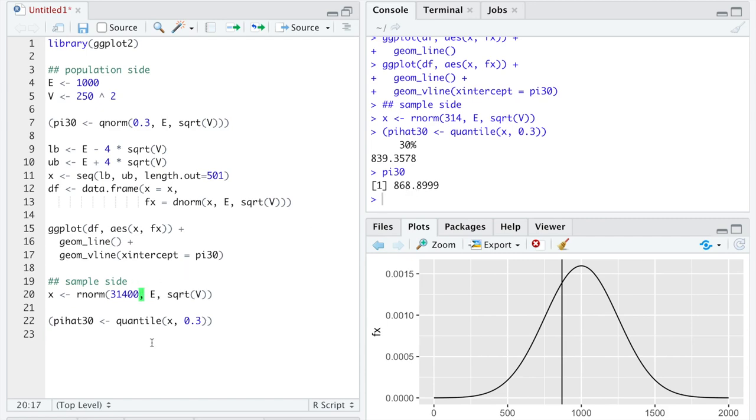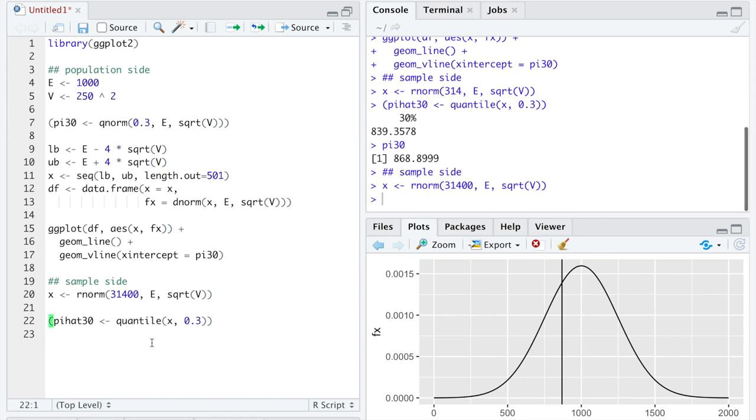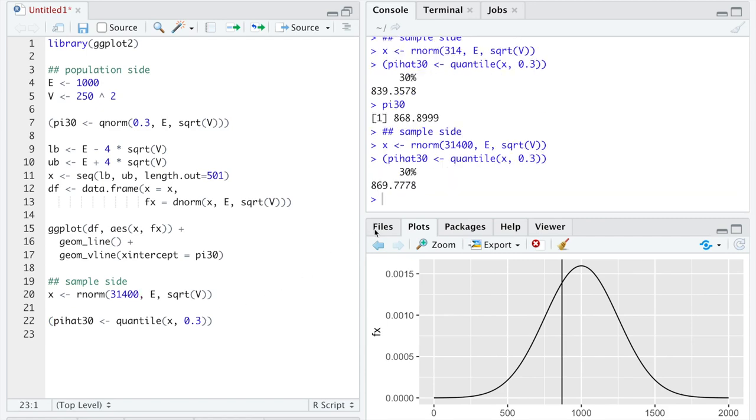840 is a reasonable guess of 868.9. And similarly, like we've seen before, if you just increase your sample size and guess again, you will be closer to the true population parameter.